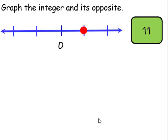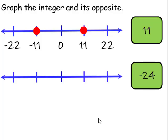On the positive side, we can graph 11. On the negative side, the opposite of 11 would be negative 11. Now I see we're going in increments of 11, so this would be negative 22 and this would be 22.